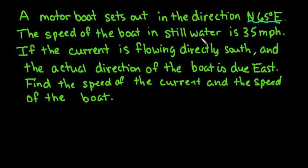The speed of the boat in still water is 35 miles per hour, so this is what we're going to use as our magnitude. If the current is flowing directly south and the actual direction of the boat is due east, we want to find the speed of the current and the speed of the boat.